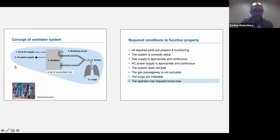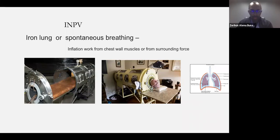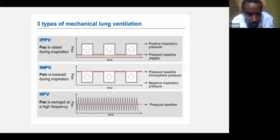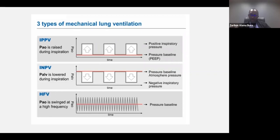The first ventilators were negative pressure ventilators — the iron lung — where the patient has no endotracheal tube and the chest wall is pulled out by negative pressure. We then progressed to positive pressure ventilation. There are three types of mechanical lung ventilation: intermittent, negative pressure ventilation where airway pressure drops below the atmospheric baseline, and positive pressure where it goes above.